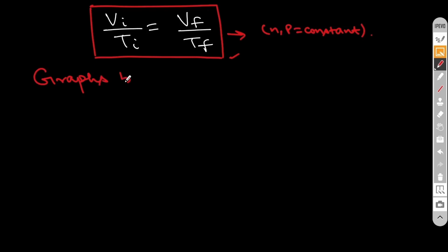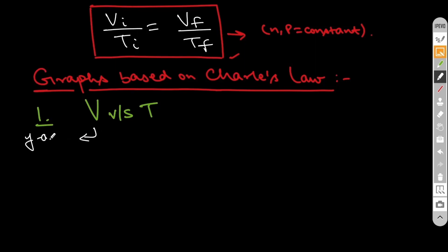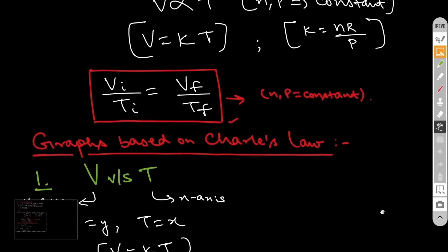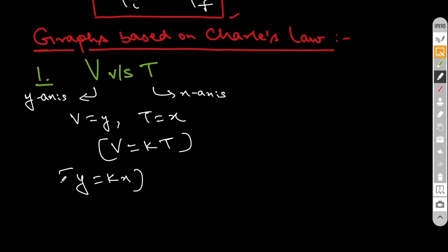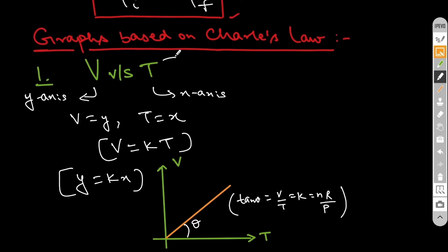Now we'll discuss graphs based on Charles law. First, the V versus T graph: V is on the Y axis and T on the X axis. Since V = KT, we get Y = KX, which is of the form Y = MX + C where the intercept C is zero, meaning it passes through the origin. The angle theta satisfies tan(theta) = V/T = K = nR/P. Here T is kept in Kelvin — this is an important point.